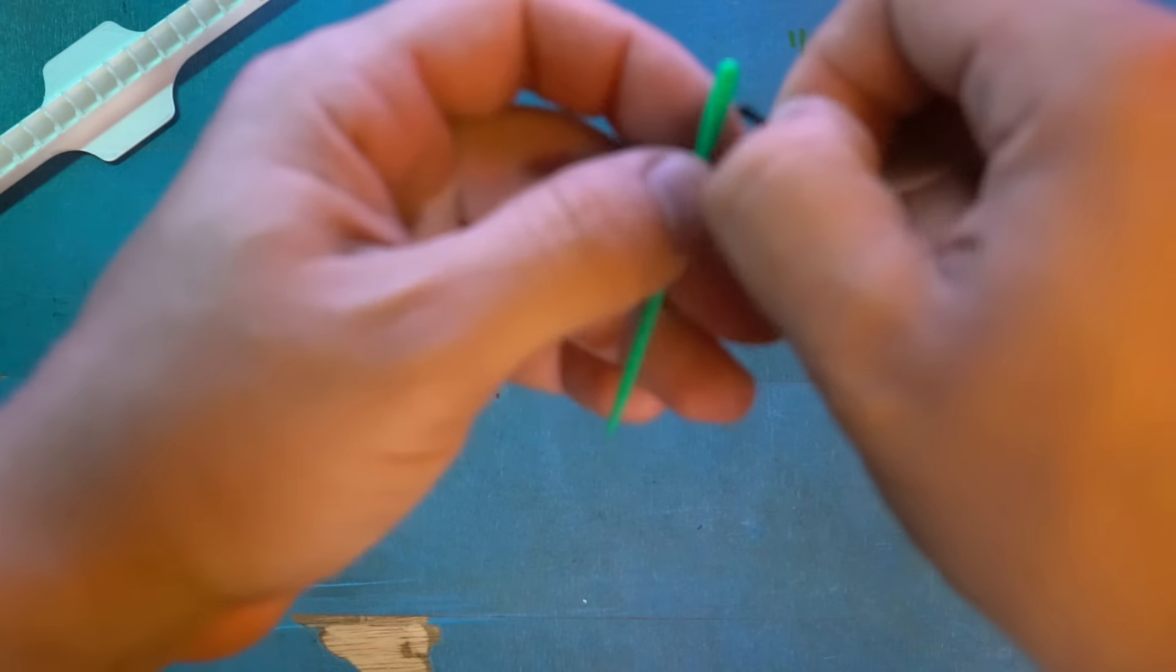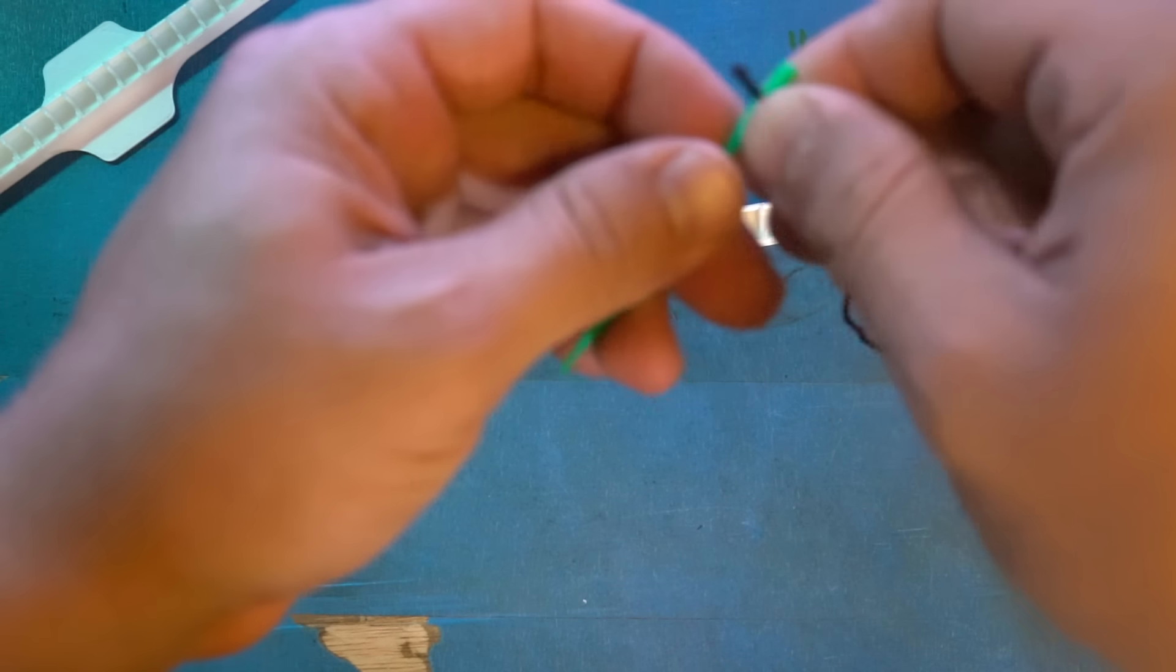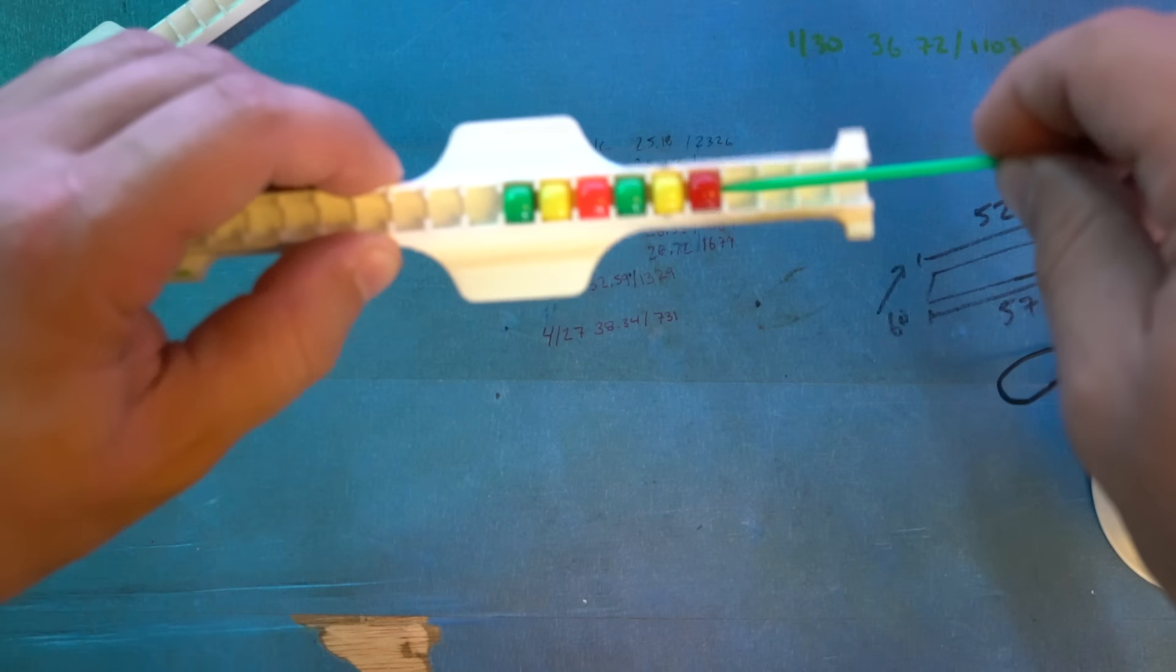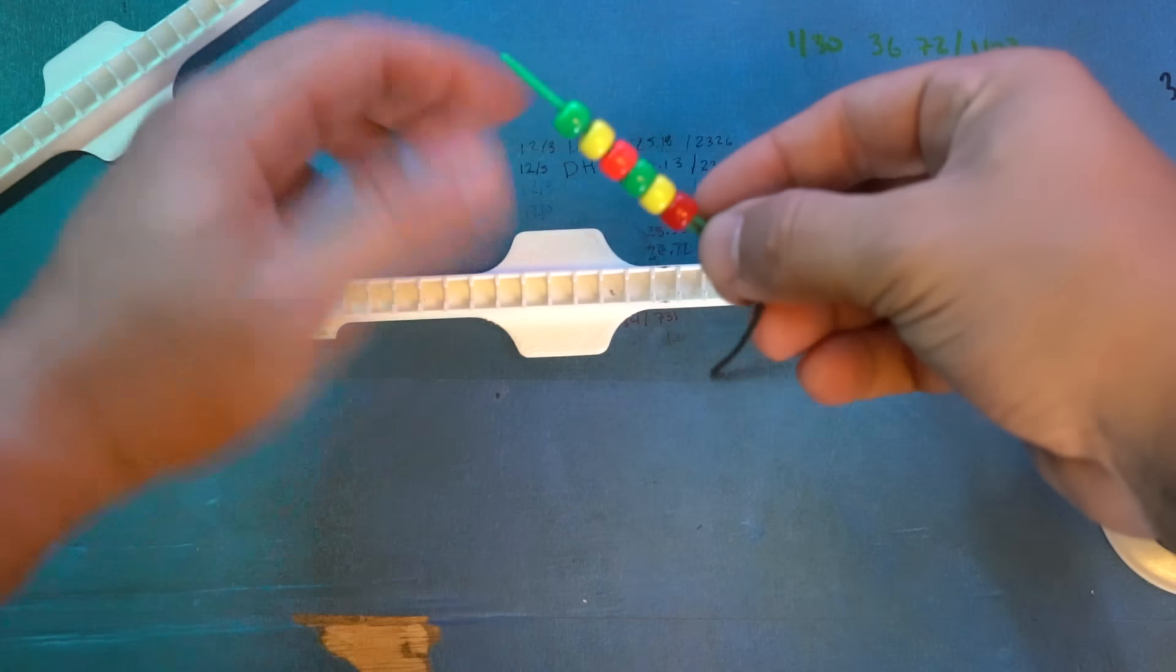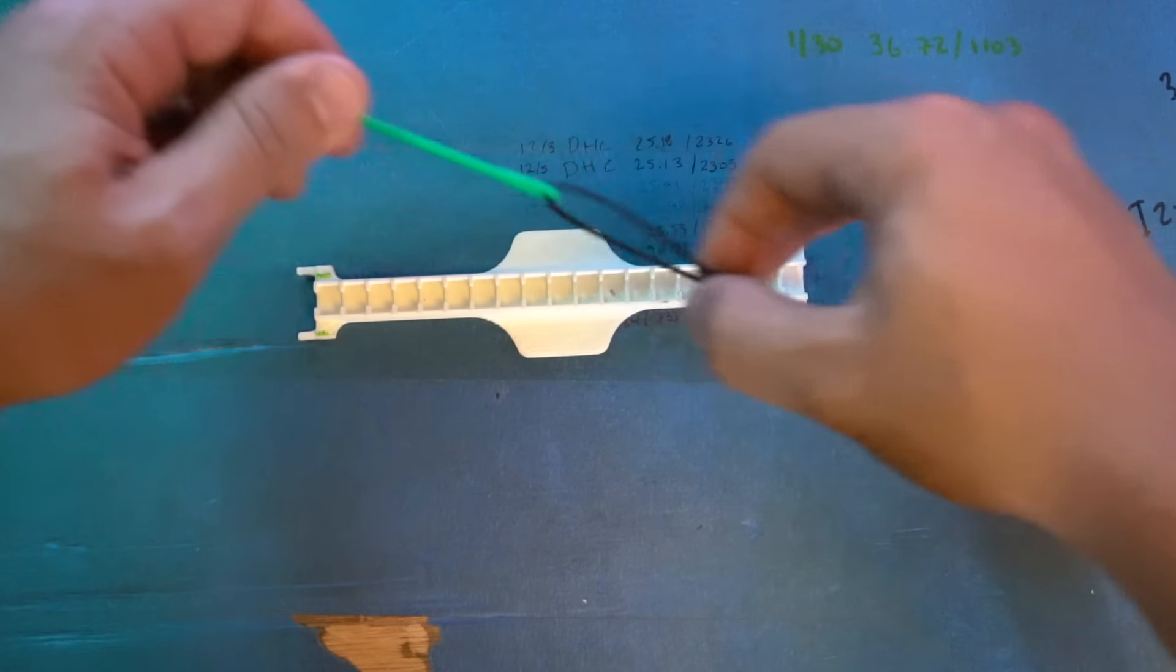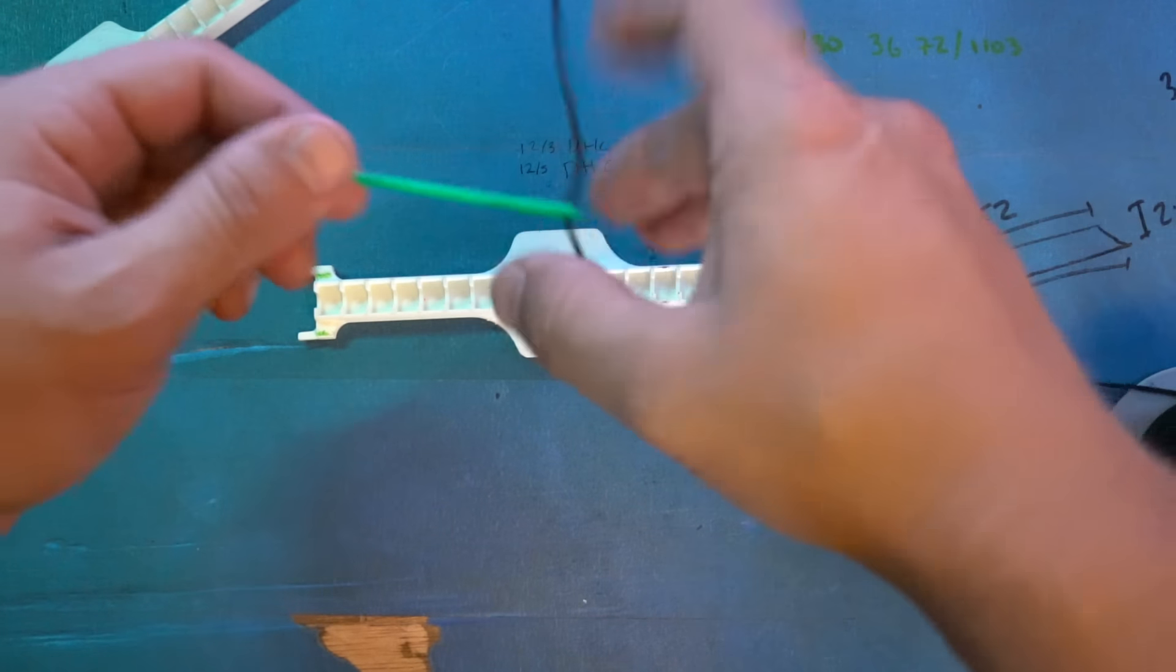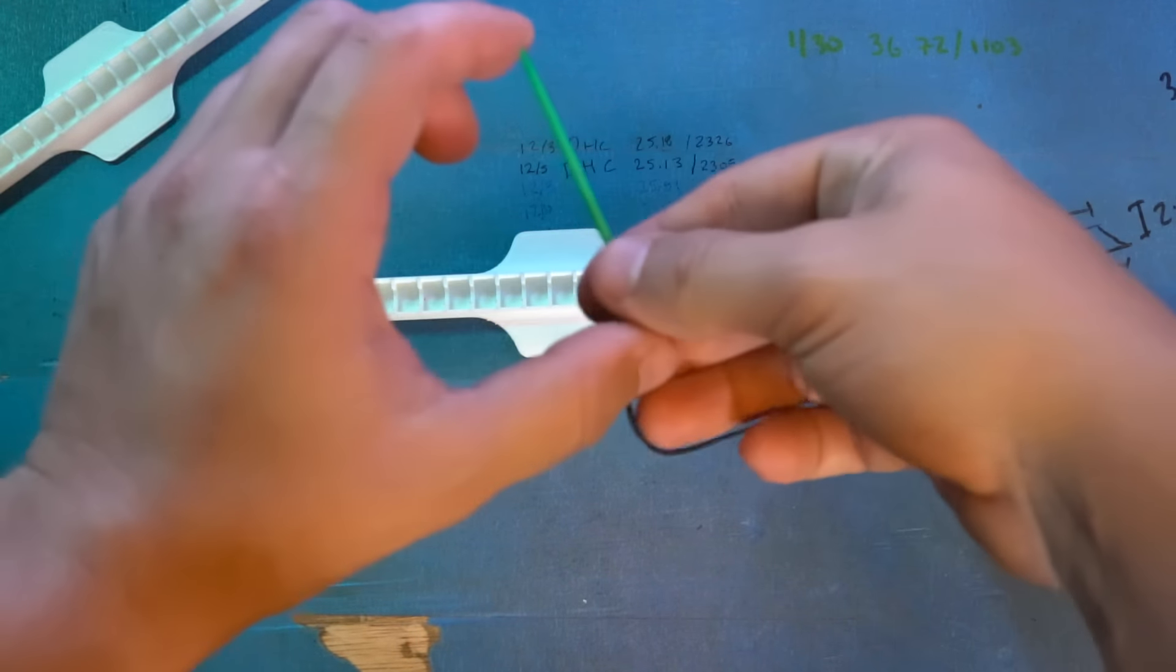So then you would thread your needle and just go through and pick them up like so, and slide them onto the string. And then you would do more, basically the length of the needle.